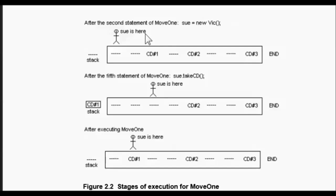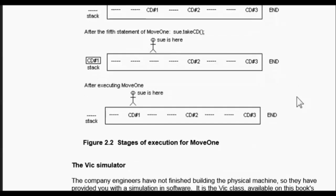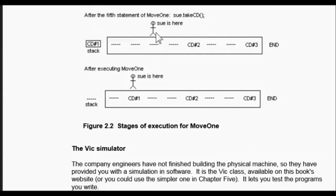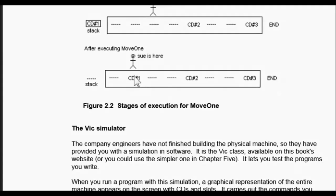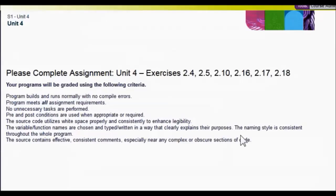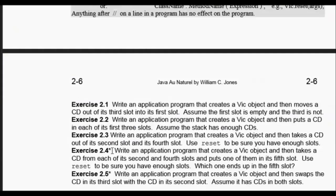We start out by instantiating a new VIC within the first slot. After the fifth statement of Move1, Sue takes the CD and puts it on the stack. After executing Move1, Sue is back at slot two. So those are the stages of execution. Let's go look at exercise 4.00. The exercises are 2.4, 2.5, 2.10, 2.16, 2.17, and 2.18 — we're going to do all of them in this one video.